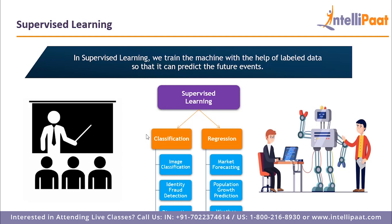The second type of supervised learning problems are classification problems, where we predict different categories. For example, classifying images based on people, animals, or objects they contain. Another example is identity fraud detection — a machine learns patterns from previous fraudulent cases and tags suspicious transactions as fraudulent, which is very helpful in banking. We can also use supervised learning in diagnostics to classify whether a patient has a particular disease or not.